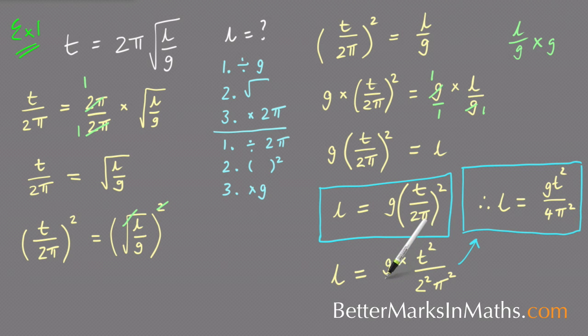And again, this G, if you put it over 1, then when you times fractions together, it's always tops together, bottoms together, you end up with G times T squared, as I've got here. And 2 squared is 4, and then π squared is just π squared, and 4π squared on the bottom. So either of those two are acceptable answers, and you just need to check with your teacher how far you're supposed to go in this kind of question. So that's the first example where I'm showing you how to make the top letter in here the subject.